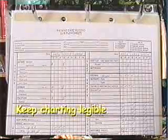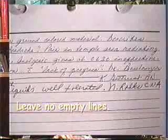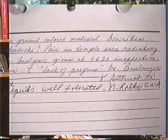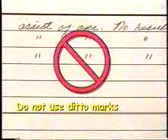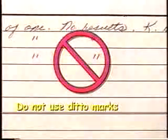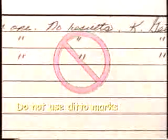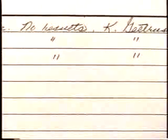Keep charting legible and either print or write clearly. Leave no empty lines or spaces — draw a line through any blank space. This will prevent others from recording in a space that includes your signature. You are not permitted to use any ditto marks; if you are going to write the same thing two or three different times, you need to write the words out in full. You may never use ditto marks.